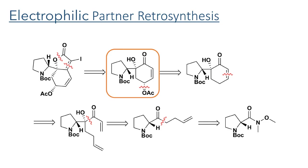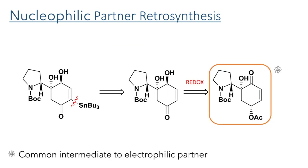The retrosynthesis of the electrophilic coupling partner begins with disconnecting the iodobutenolide ring to the cyclohexane highlighted in orange, which had previously been synthesised. Disconnecting the acetate group and the alpha-beta unsaturated bond leaves a pyroldiene intermediate, which ultimately can be derived from the Weinreb amide proline, a building block from the chiral pool, which possesses a single stereocenter that will be used to relay chiral control to the other stereocenters throughout the synthesis.